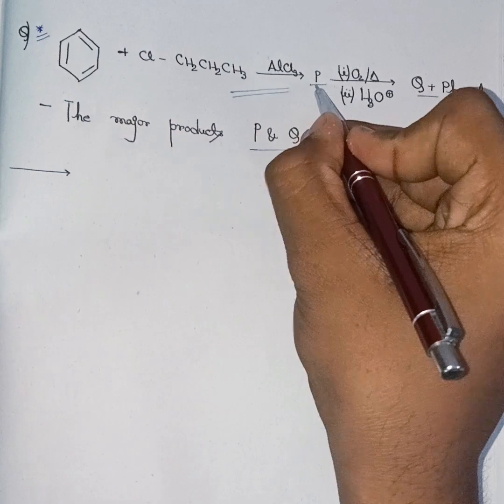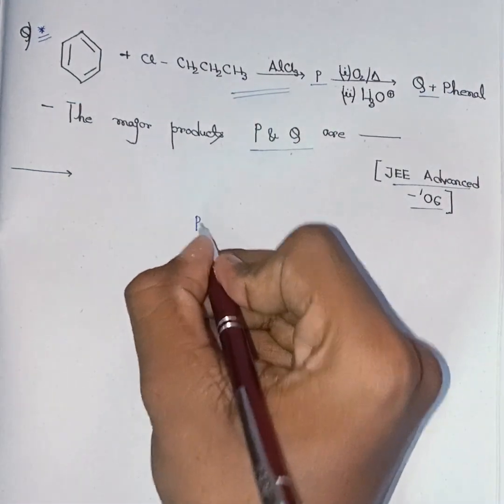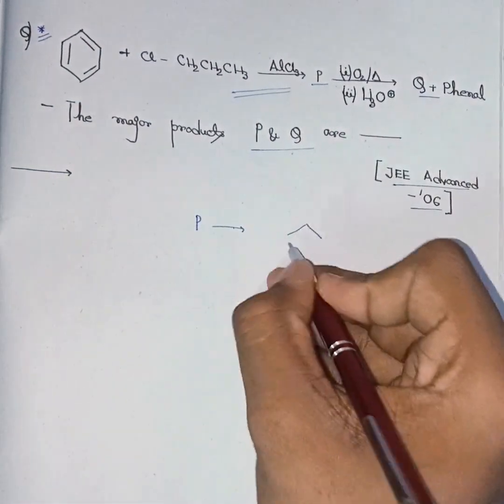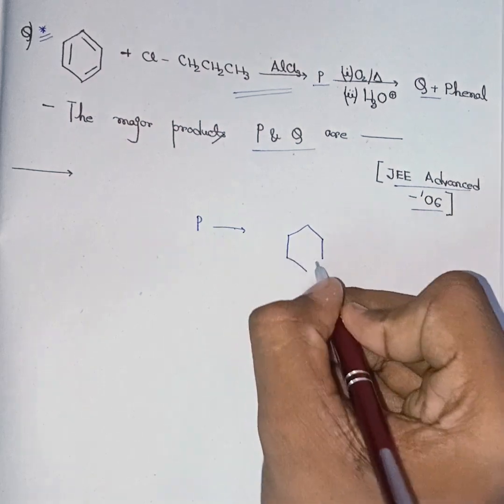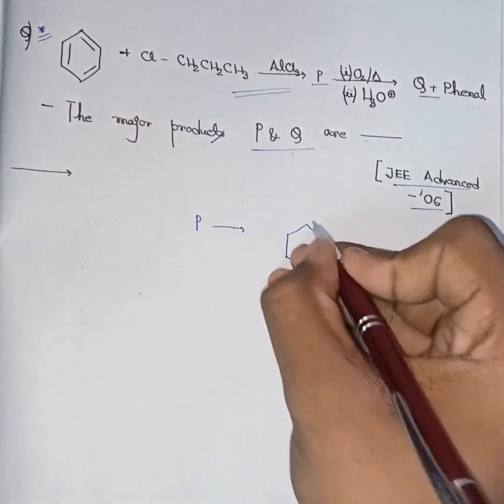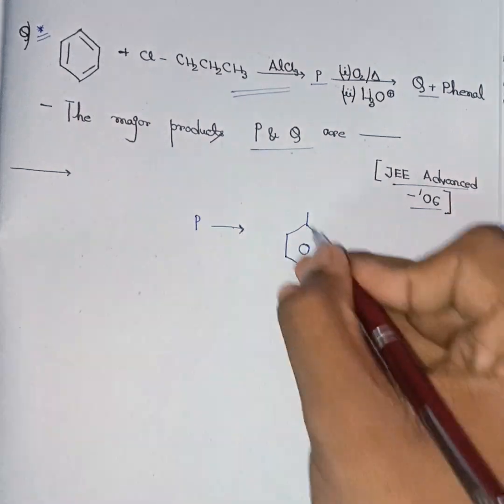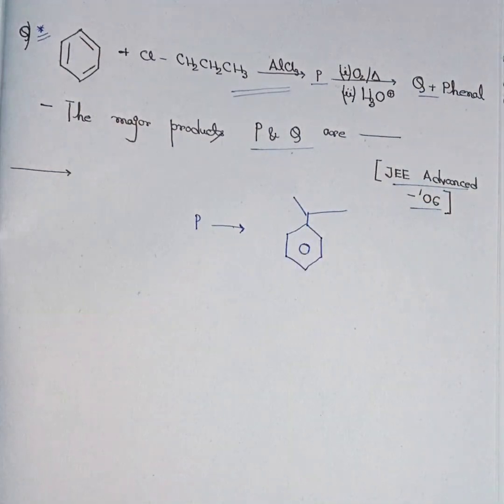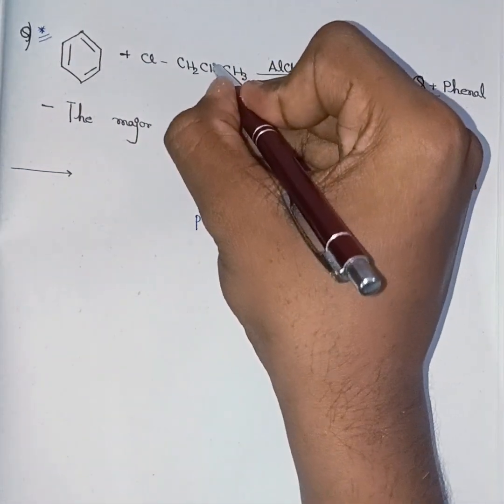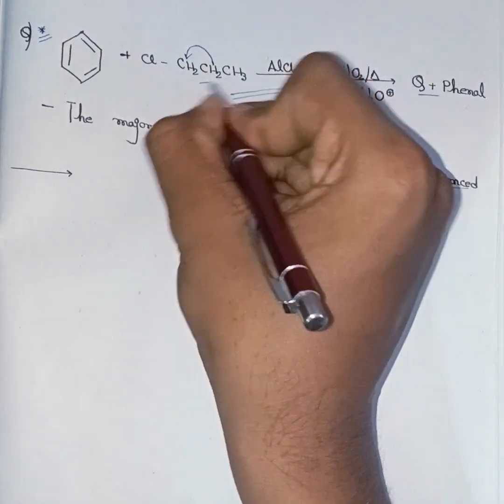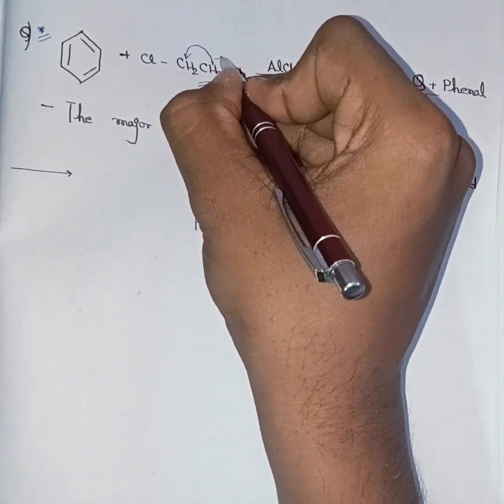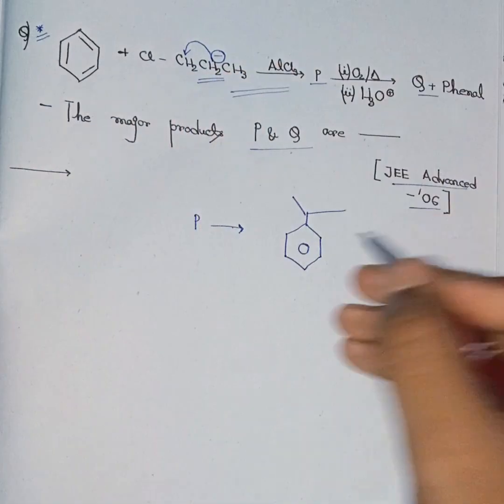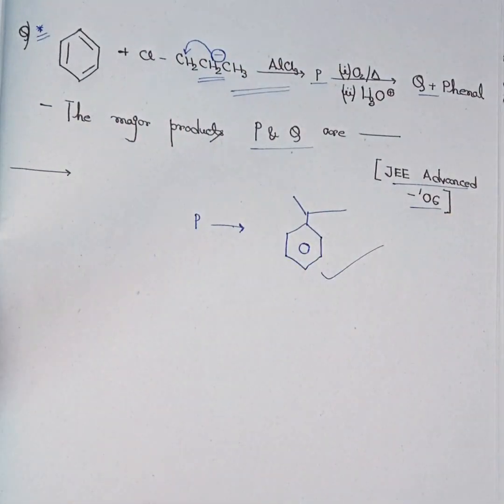So the product P will be this. In alkylation, the stable carbocation is formed, so this will be formed like this. This hydrogen will go here and this carbon will get the positive charge, so this will be formed.